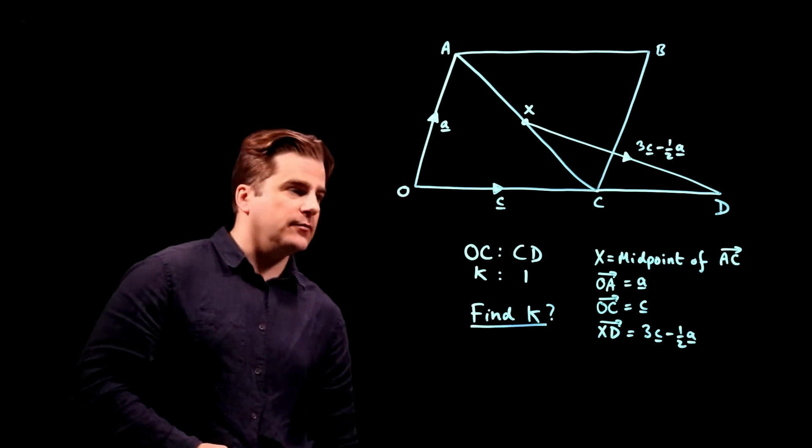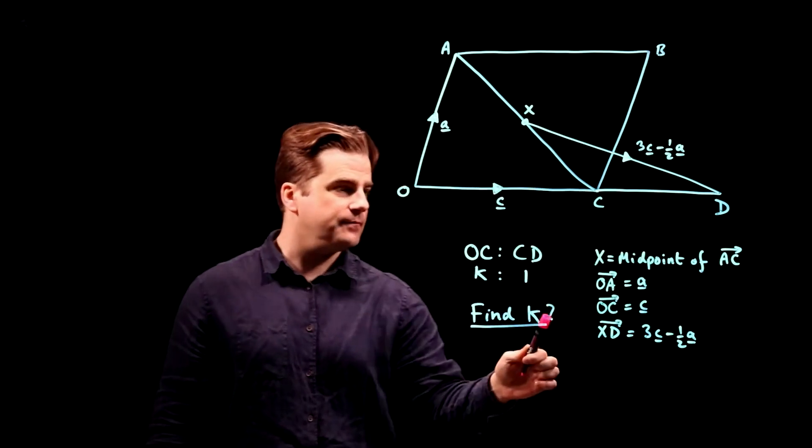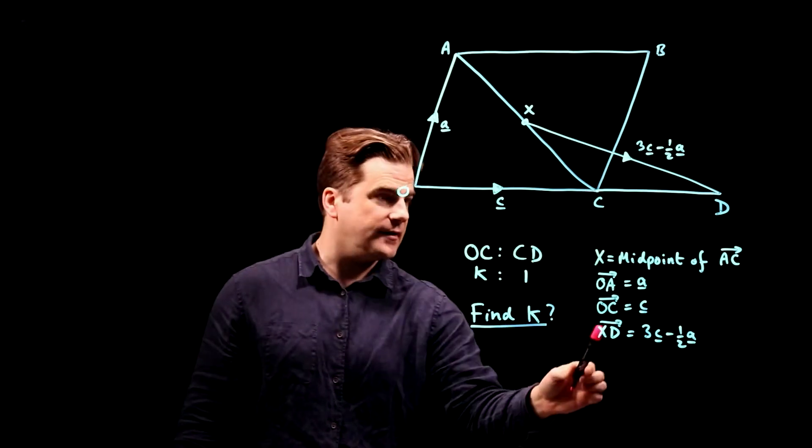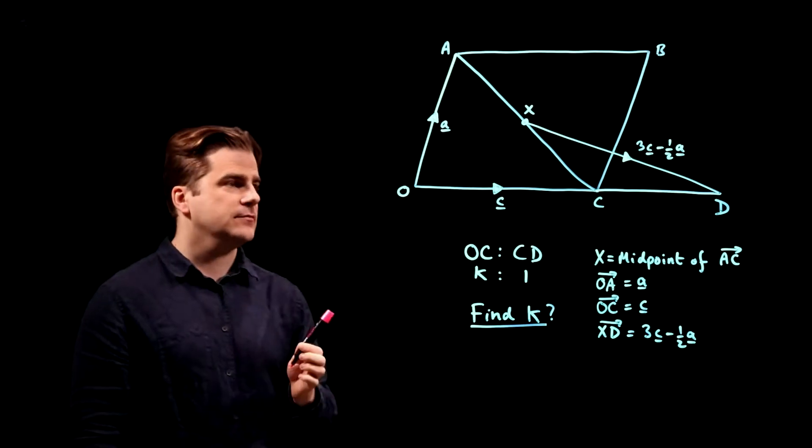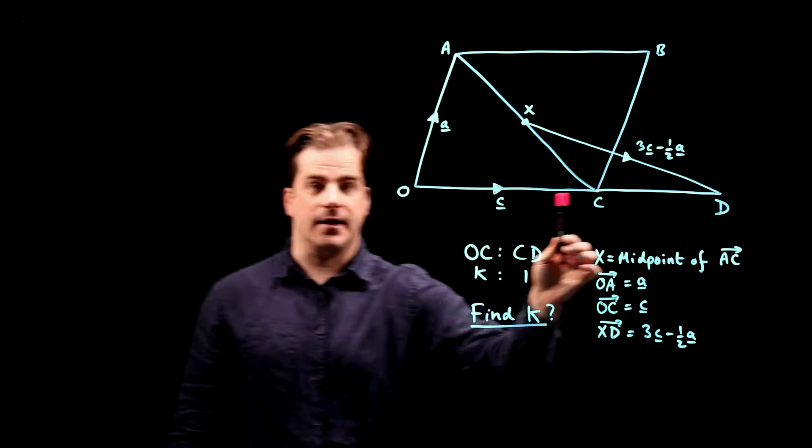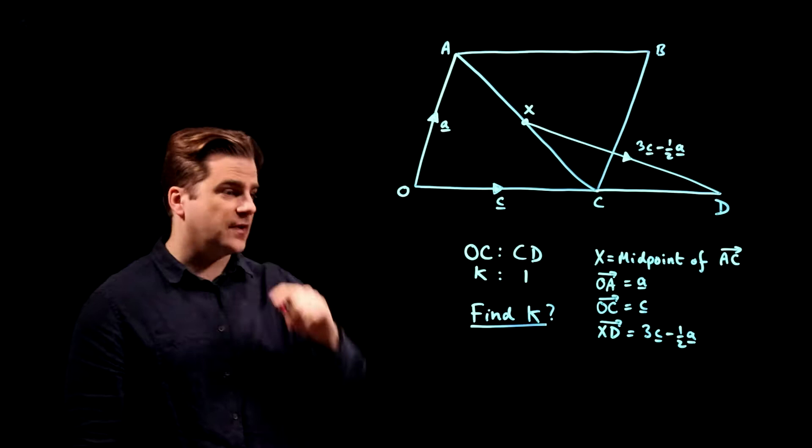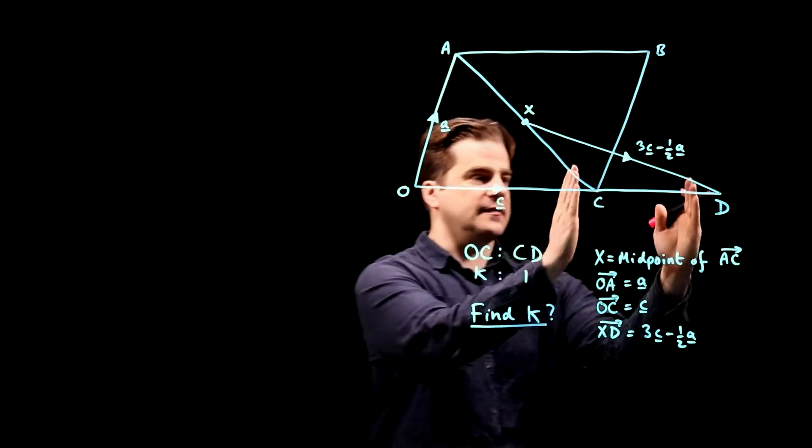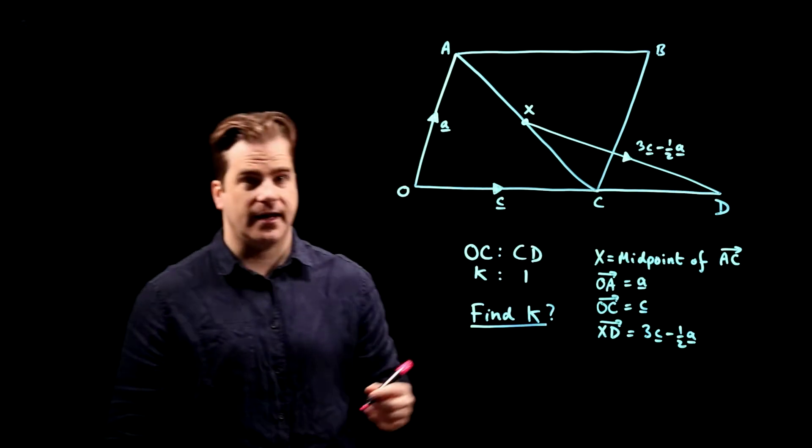Okay, so X is the midpoint of AC, O to A is a, O to C is c, and X to D is 3c minus a half a. We don't know exactly where D is here, doesn't really matter as long as it's something like that on the diagram. We're told that the ratio of O to C to C to D is K to 1, we have to find K.